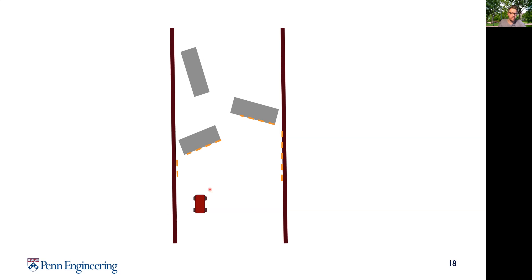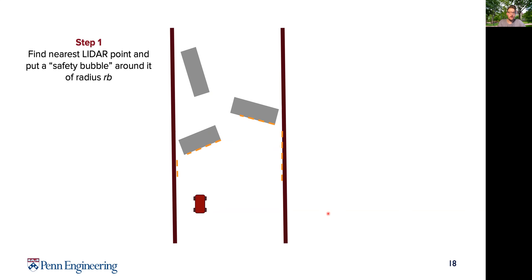Previously we were looking for the furthest LIDAR point we could drive to; now we are looking for the closest LIDAR point we could actually hit. So we are more pessimistic, but this approach enhances our idea from before and lets our car drive faster and better. We have the same setup: three obstacles, our car, and LIDAR beams reflecting off obstacles. First, we find the nearest LIDAR point and put a safety bubble around it of radius Rb. What do you think is the nearest LIDAR point here?